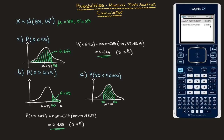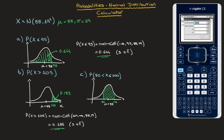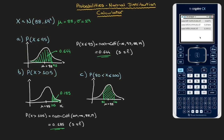We use the calculator and the normal CDF function. I click on menu, select the fifth option probability, then the fifth option distributions, and the second option normal CDF. I'm asked for the lower bound — in this case it's 80, so I type 80. The upper bound is 100, since X has to be less than or equal to 100, so I type 100. I replace the mean with 88 and the standard deviation with 19. I click on OK. The area enclosed is equal to 0.399311.